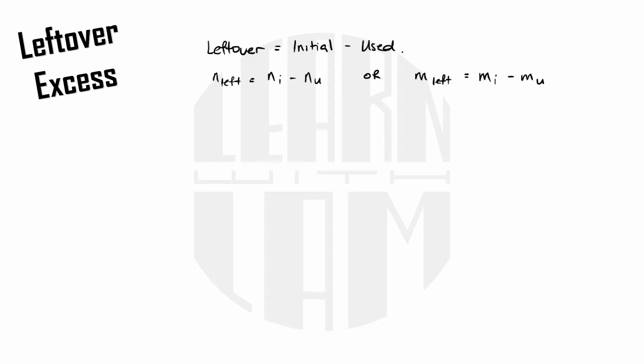So let's practice. What mass of excess reactant is left over when reacting 10.0 grams of hydrogen and a hundred grams of oxygen to create water?